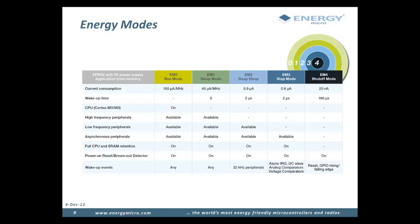When we go down to EM2, or deep sleep, the high frequency clock is turned off, which means that high frequency peripherals such as the UART are unavailable. This is a very useful sleep mode because of the drastic reduction in power consumption. In EM2, the low frequency clock is still allowed to run, so all the low frequency peripherals are still available. This includes, for instance, the real-time counter, the low-energy UART, and the low-energy sensor interface.